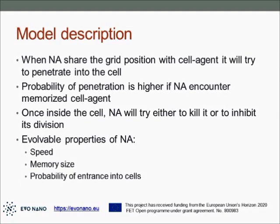When memory becomes full, in order to learn something new they need to forget the oldest acquired memory. When nano agents share a grid position with a cell agent, they will try to penetrate into that cell, and the probability of penetration is higher if the nano agent has already memorized that cell agent. We did not apply a zero-or-one approach where a nano agent will penetrate only if recognized, because in reality it is probably impossible to design a drug so specific that it will only attack a particular cell line — they usually just have a preference for some cell types.